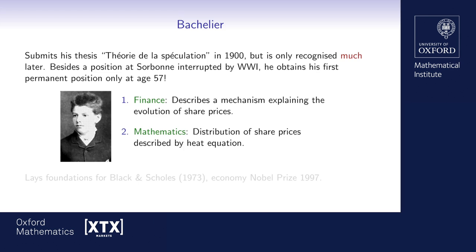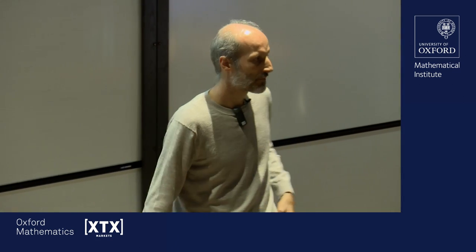Bachelier, a few years earlier, came at exactly the same mathematics from a completely different perspective, because he was interested in the evolution of stock prices. What he did in his PhD was try to derive predictions for stock price evolution — the same story of people buying and selling stocks, and he made this quantitative. Then he derived the same heat equation in exactly the same way as Einstein and Smoluchowski derived it for Brownian motion.